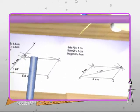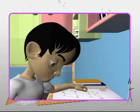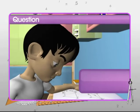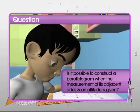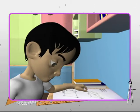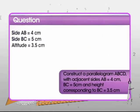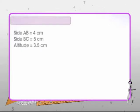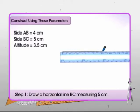Johnny now has two parallelograms, both with different heights. What if he wants to make a parallelogram if its two sides and height are given? The answer is yes — height can be another parameter. We need to draw a parallelogram with sides 4 and 5 centimeters and the height between the sides being 3.5 centimeters. For this, we first draw a horizontal line BC measuring 5 centimeters.